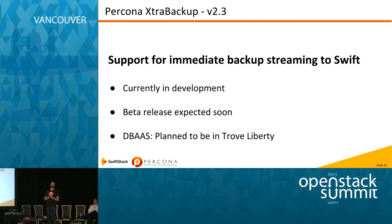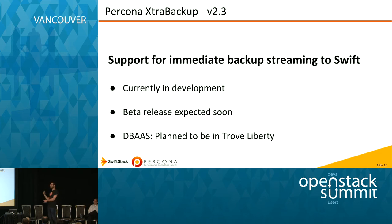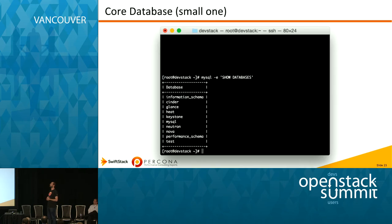What we added in XtraBackup version 2.3 — the latest released version is 2.2 — is support for streaming to Swift. We've added a tool called XBCloud. It also has S3 support currently in development; we expect to release a beta very soon, maybe this week or next week. Also, it's planned to be included in Trove for Database-as-a-Service in Liberty.